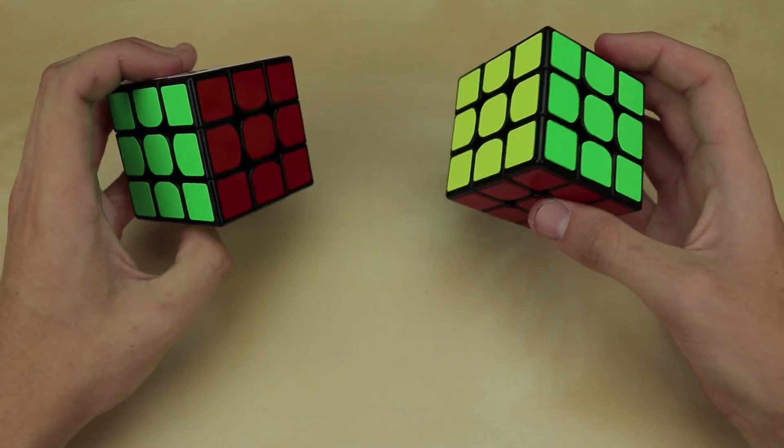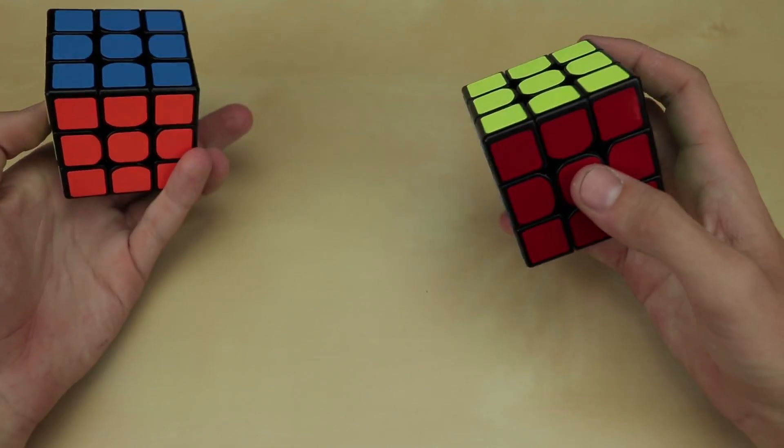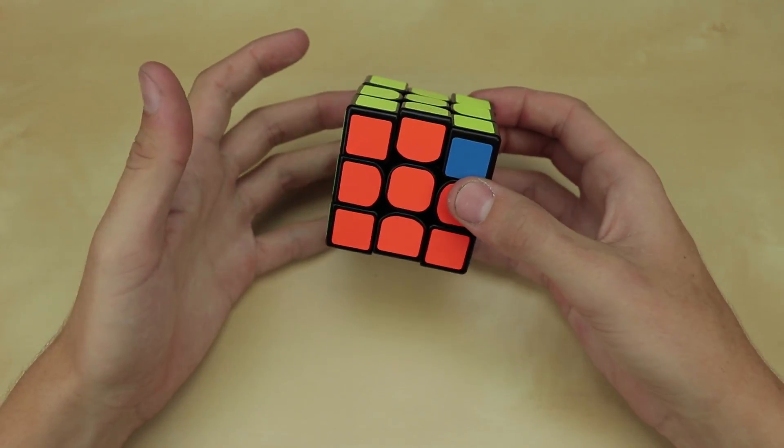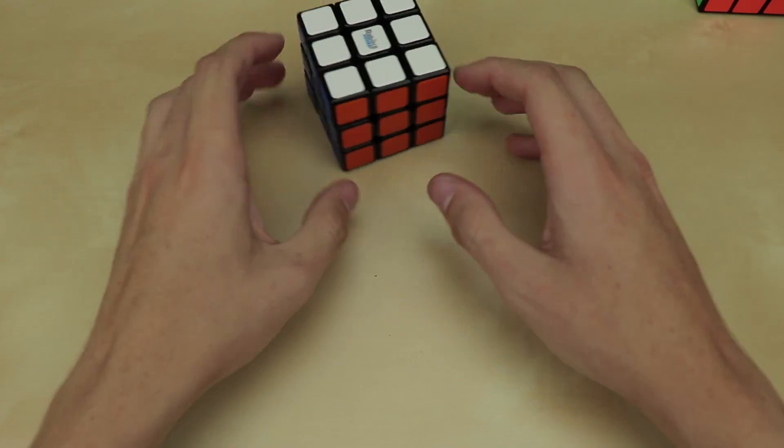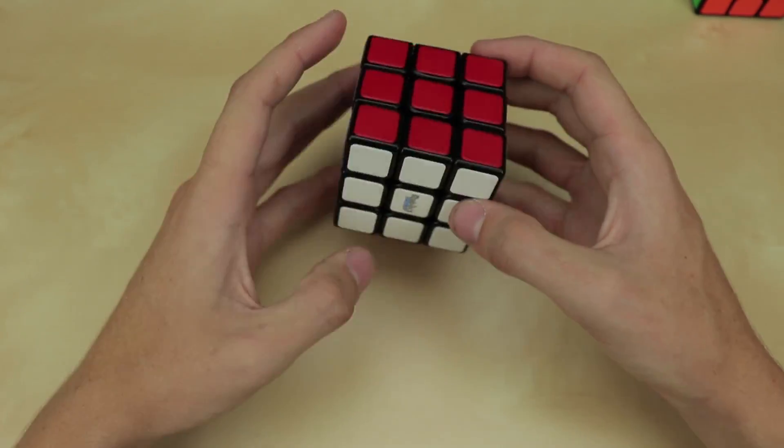Just kind of a mid-range Speed Cube. It's not really competitive with something like a Valk or a GTS or a Gans Air in performance, but it is a little bit more competitive when it comes to price. Anyway, back to the Rubik's Speed Cube. Here's what we're going to be doing with it. One word. Magnets.